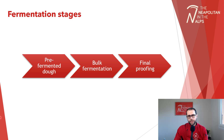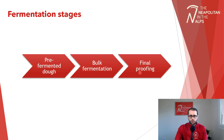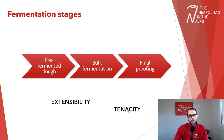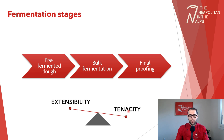To better understand the relation between fermentation and gluten elasticity, we need to look at the elastic properties of gluten. There are two: extensibility and tenacity. Extensibility is gluten's ability to be easily stretched. Tenacity, on the other hand, is the strength and resistance to stretching. In pizza dough, we always need to achieve a balance between extensibility and tenacity — this is the key concept of gluten elasticity.